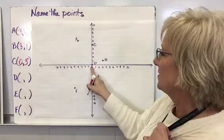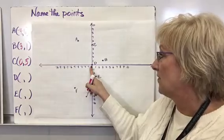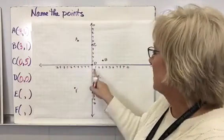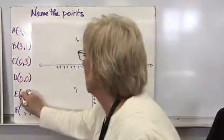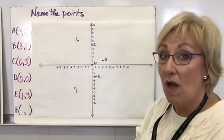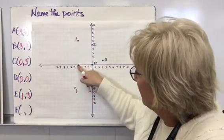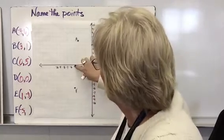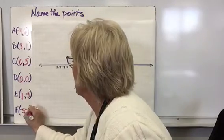D is right where the two number lines intersect, which is the origin — the ordered pair (0, 0). For E, I go over one in a positive direction and down three in a negative direction, so E is (1, -3). For F, I go five units in a negative direction and then down six in a negative direction, so F is (-5, -6).